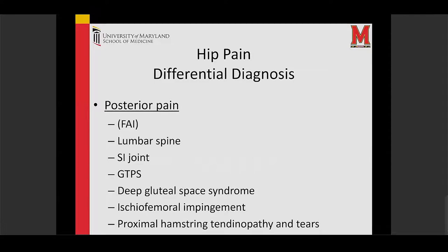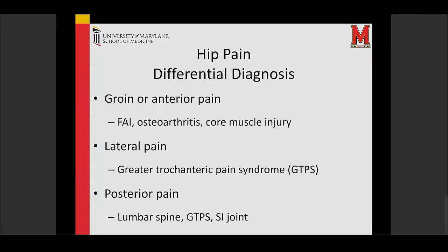Posteriorly, the most common thing is usually related to the spine — whether that's the lumbar spine or the sacroiliac joints. Many people come in saying they have hip pain and it's really toward the back. Greater trochanteric pain syndrome is more commonly on the lateral side but sometimes people feel that pain posteriorly. There are a few other less common things — deep gluteal space and ischiofemoral issues — that are outside the scope of this talk. The physical exam and history are really important for the hip and it can be hard to figure out, which is why many patients have seen multiple providers before seeing someone who specializes in this.